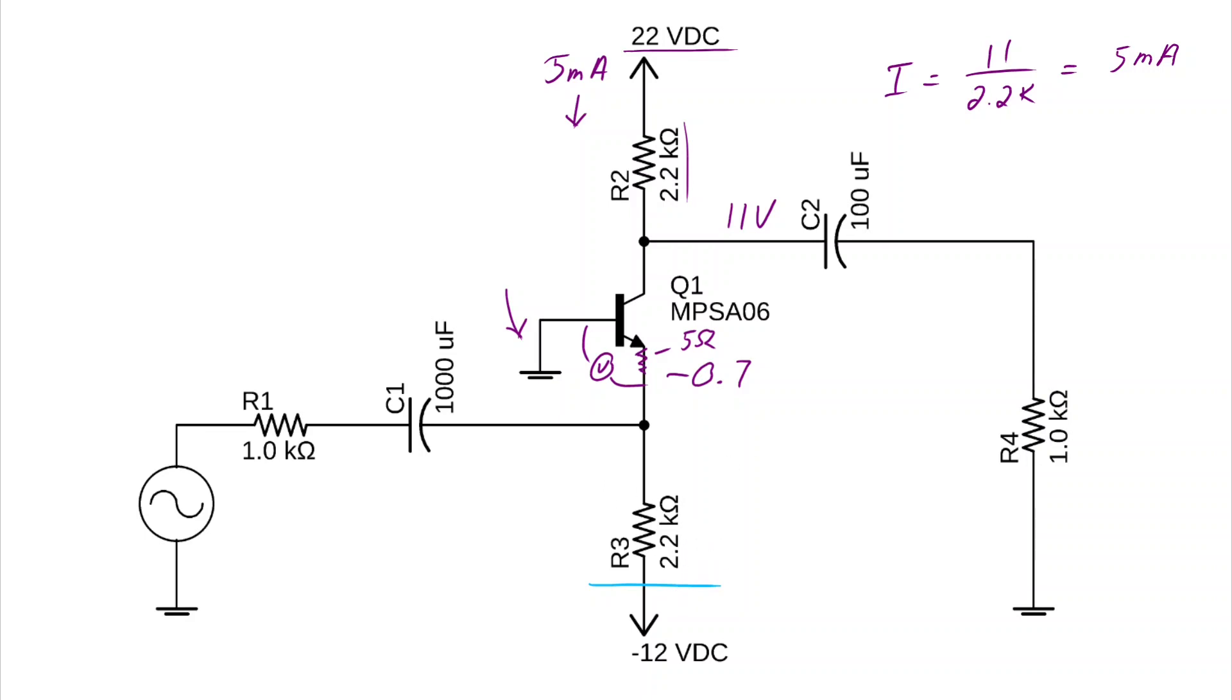Ignoring our base current, we know there's approximately 5 milliamps flowing here, which means 11 volts dropped across this resistor, to which we add this 0.7, which is approximately negative 12 volts, which is close enough for our first experiments. Although, when I do DC test the amplifier, I found that it's very close to 11 volts on the collector.